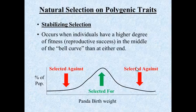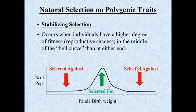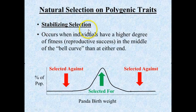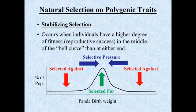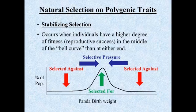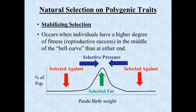These combined situations create a Goldilocks effect: anything too small has a severe disadvantage, anything too large has a severe disadvantage, and those right in the middle are strongly selected for. The result is a narrowing or stabilizing of that curve — which is where this gets its name. We have two selective pressures moving toward that middle ideal panda birth weight. It may be helpful to think of this as a percentage of the mother's weight, since there's variation in mother size, with an ideal birth weight that is neither too small nor too large.